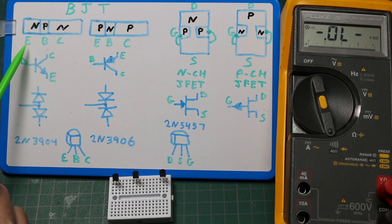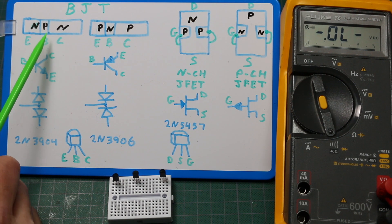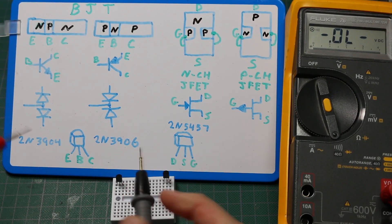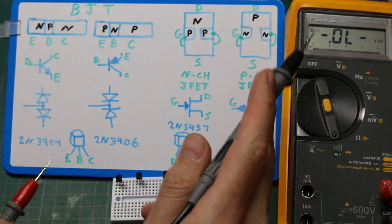So the junction from base to emitter is going to end up with a slightly higher forward voltage than the PN junction from base to collector. So if we measure these two junctions again, whichever one has the highest forward voltage drop is going to be the emitter.